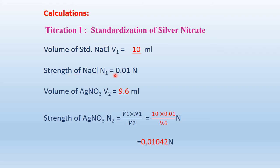The strength of NaCl is 0.01 Normal — ask your teacher if needed. Volume of AgNO₃ V1 is the titer value. Using V1N1 = V2N2, the strength of AgNO₃ is approximately 0.0083 Normal for a V1 of 12 ml. Your simulated value was different, so you will get a different value accordingly.